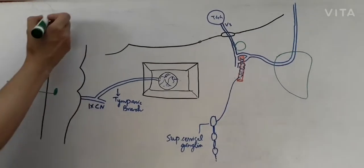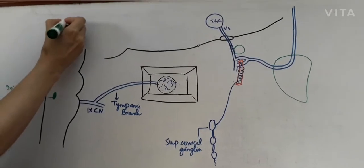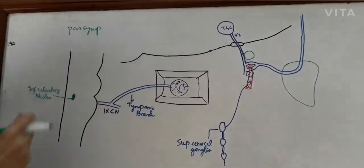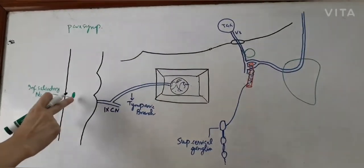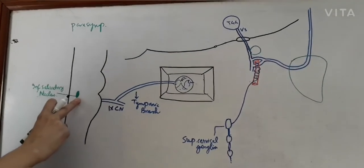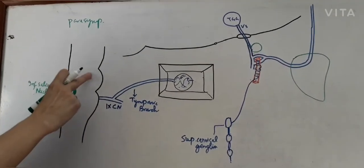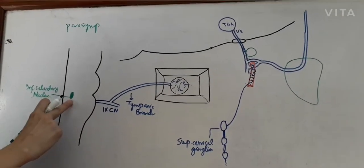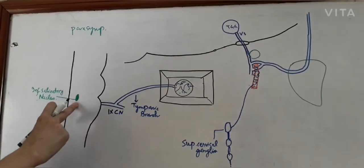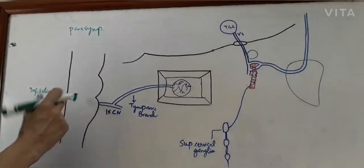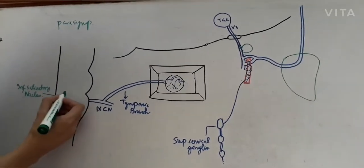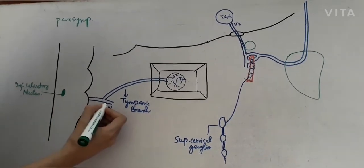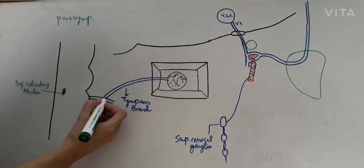First of all, the parasympathetic roots. There is a parasympathetic nucleus present here — the inferior salivatory nucleus — where the parasympathetic secretomotor fibres arise. They emerge through the brain stem at the level of the ninth nerve, the glossopharyngeal nerve, and join it.